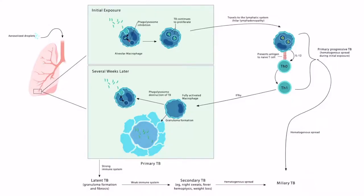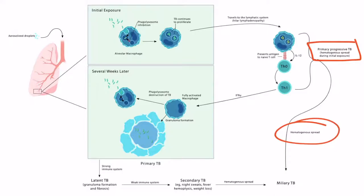The final form we'll discuss is primary progressive TB. This usually occurs in an immunocompromised patient unable to effectively mount a cell-mediated response during the initial exposure. Rather than developing fully activated macrophages, the organism cannot be adequately contained and spreads hematogenously — essentially a form of miliary TB that occurs during the initial exposure.